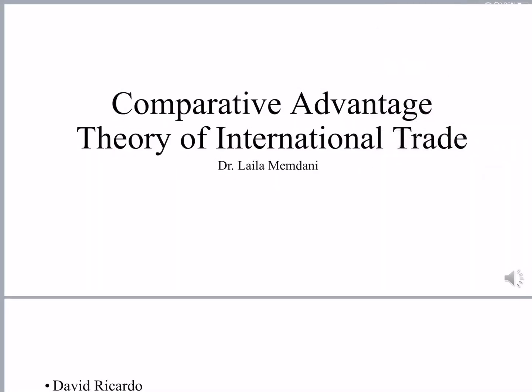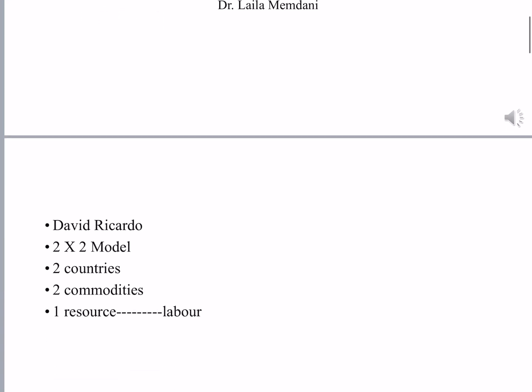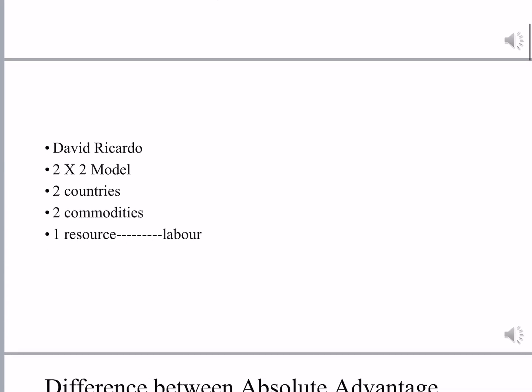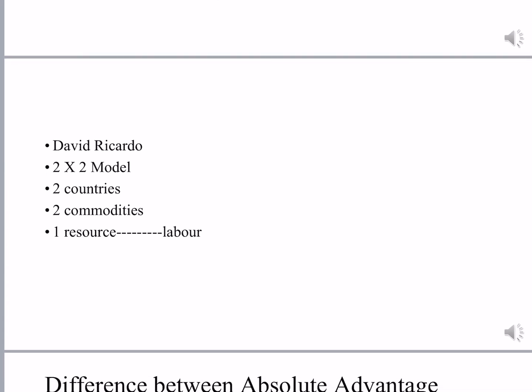In the last video I explained about the theory of absolute advantage. The continuation of this is the theory of comparative advantage, which was given by Professor David Ricardo. This theory is also a two-by-two model — it has two countries, two commodities, and one resource: labour.